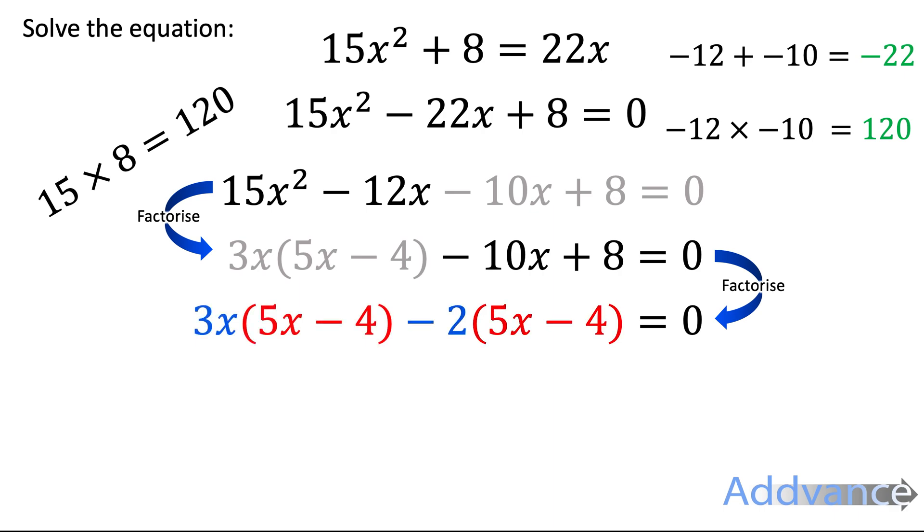Now, you should realise that the brackets are the same in both the first and last part. And that means we've done it correct so far. Now, the blue part becomes its own bracket. The red part stays as a bracket. We get this. 3x minus 2 times 5x minus 4 is equal to 0. And that is the factorised form.